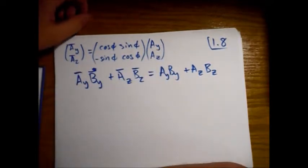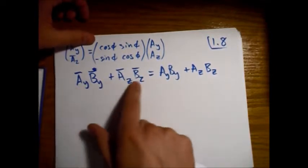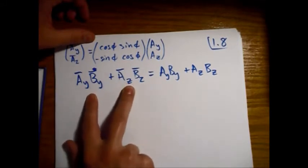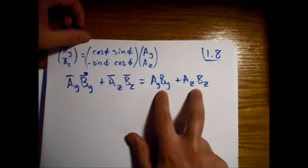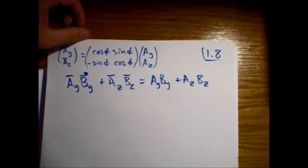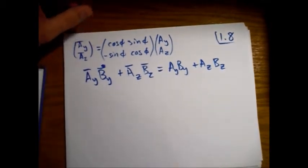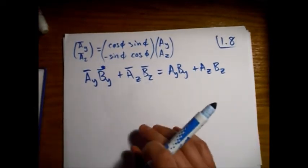preserves dot products. That is, show that the transformed components, the dot product of the transformed vectors, are equal to those of the vectors before they're transformed. Alright, so this is what we're going to show right here.